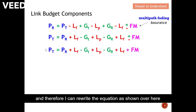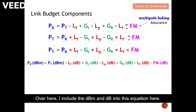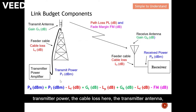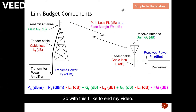I can now rewrite the equation including fade margin with a plus. It is quite normal to express the whole link budget equation with respect to the receiver power. I include the dBm and dB units into this equation. The figure on top and the equation below allow you to relate all the components: transmit power, cable loss, transmitter antenna gain, path loss, receiver antenna gain, cable loss, and last but not least the fade margin to combat fading effects. With this I would like to end my video — please like and subscribe, thank you.